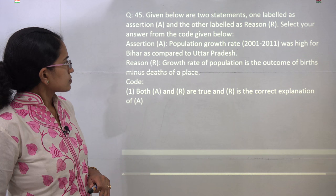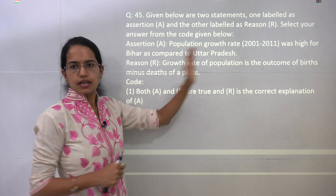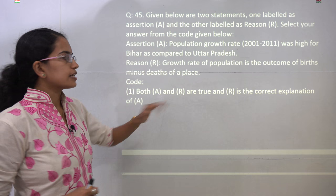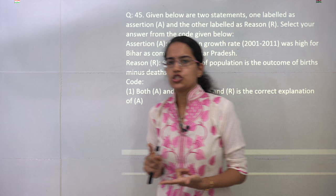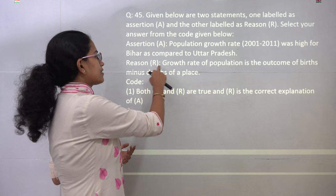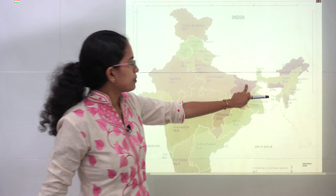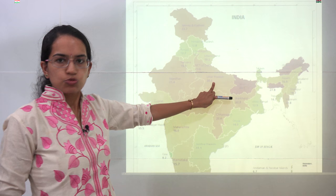The next question has an assertion-reason statement. The assertion is correct because the population growth rate has been high for Bihar compared to Uttar Pradesh, as seen in the map. However, growth rate does not simply refer to natural increase — it also includes migration, both in-migration and out-migration. So the reason is incorrect and the assertion is correct. Bihar has nearly 25.1% Decadal Growth Rate compared to Uttar Pradesh's 20%.